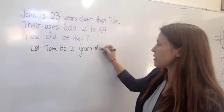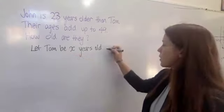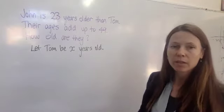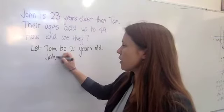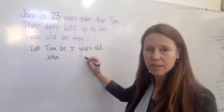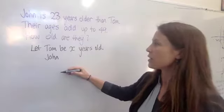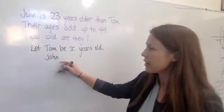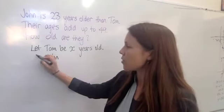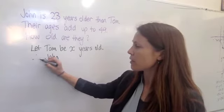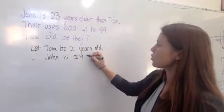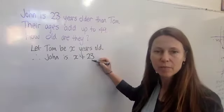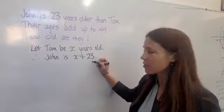Here x is a number of years. Now, if Tom is x years old, you need to think, how old is John? And if you'd like to write it down separately as a sentence, you can, or you could jump straight to making the equation. Let's just be really clear. Let Tom be x years old. Therefore, these three dots mean therefore, John is x plus 23. Does that make sense? Because he's 23 years older than Tom.